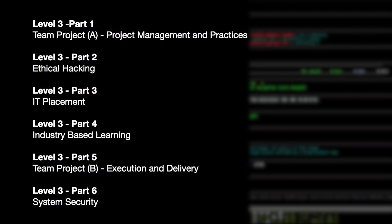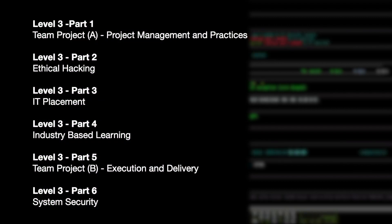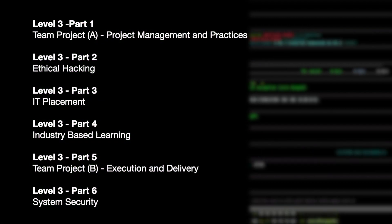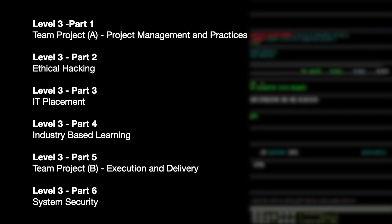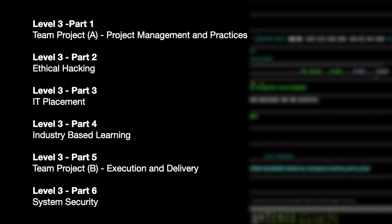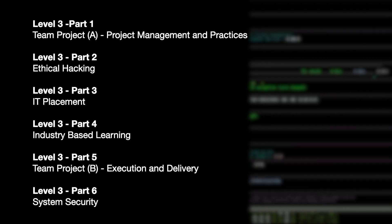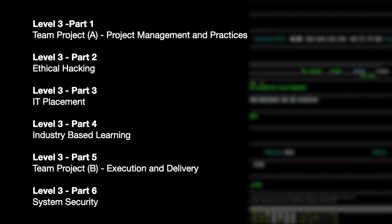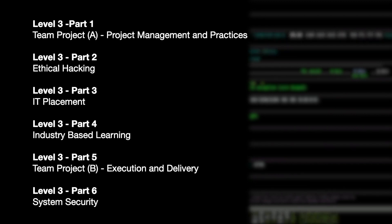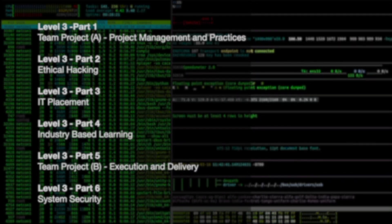Level three has six parts and they are: team project, project management and practices, ethical hacking, IT placement, industry based learning, team project execution and delivery, and system security.